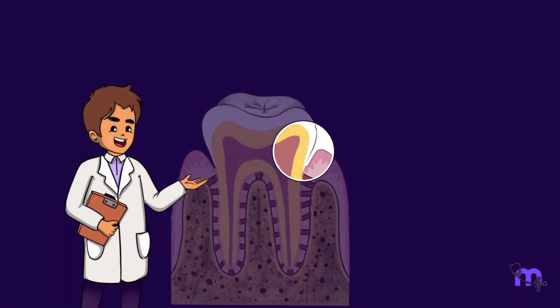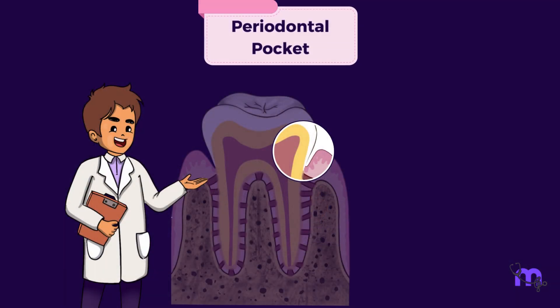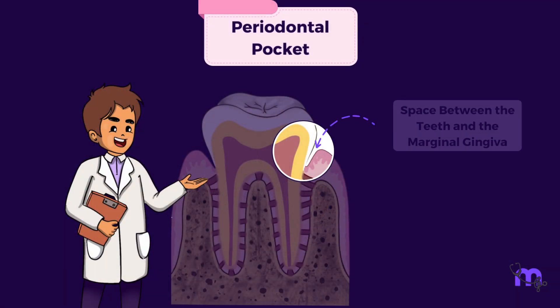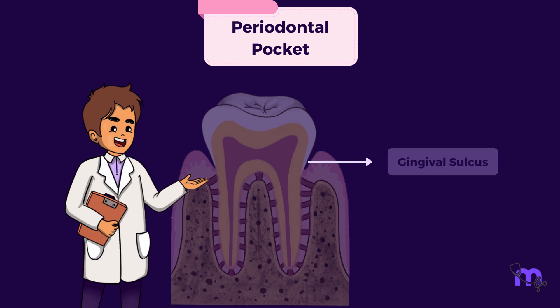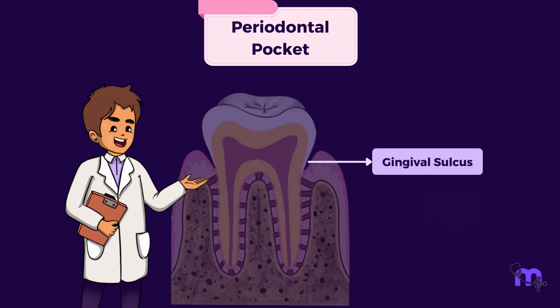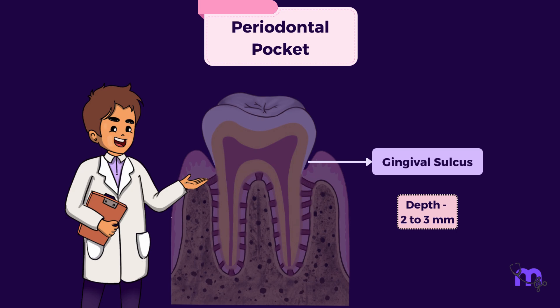Let me throw some light on the periodontal pocket. We have a space between our teeth and the marginal gingiva, called the gingival sulcus. Its depth ranges from 2 to 3 mm.